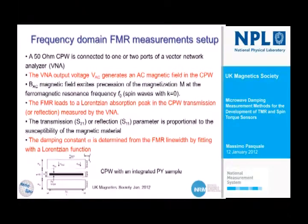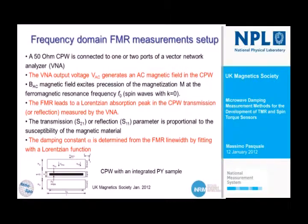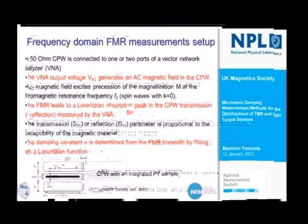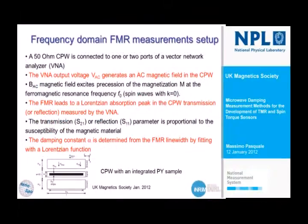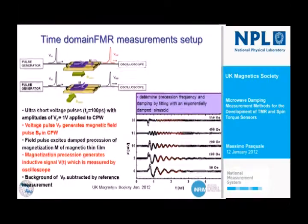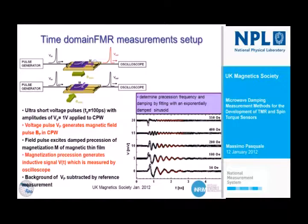The VNA generates an AC magnetic field in the microwave regime inside the waveguide. This field excites precession of the magnetization inside the material, and we have energy absorption detected by the network analyzer. This energy absorption is typically a Lorentzian peak which can be fitted, and this fitting determines the damping. The same measurements can be conducted not only in the frequency domain but also in the time domain.